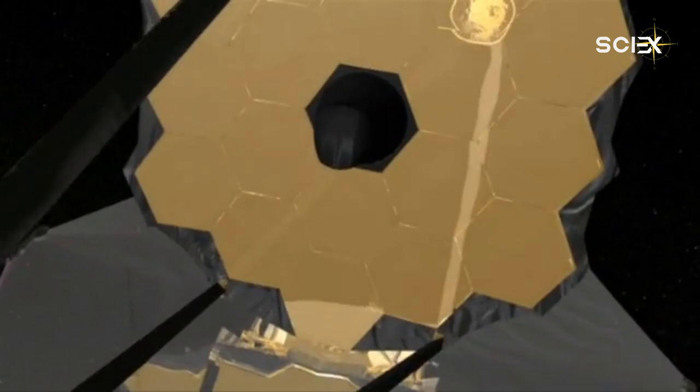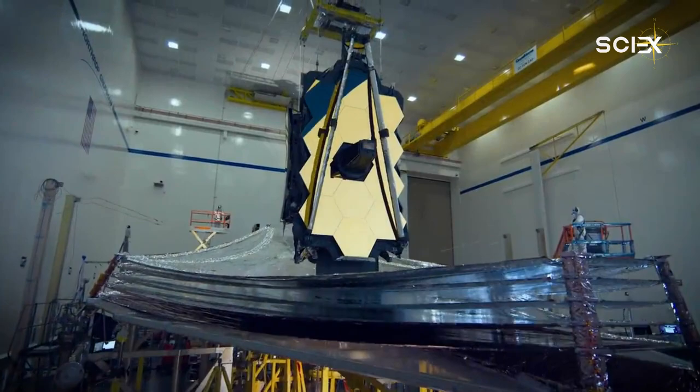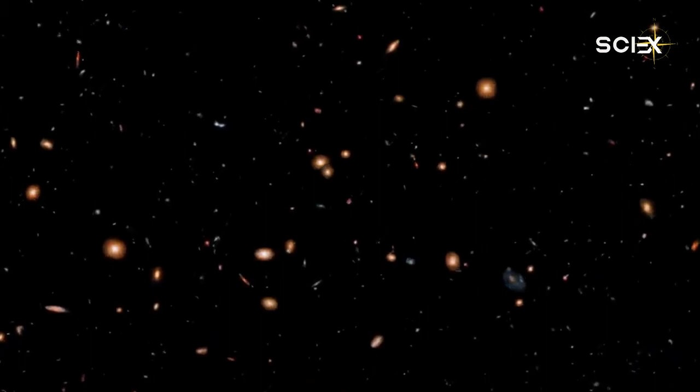Webb's study of the giant gas planet WASP-96b will be the first full-color spectrum of an exoplanet. The spectrum will include different wavelengths of light that could reveal new information about the planet, such as whether it has an atmosphere. Discovered in 2014, WASP-96b is located 1,150 light-years from Earth. It has half the mass of Jupiter and completes an orbit around its star every 3.4 days.